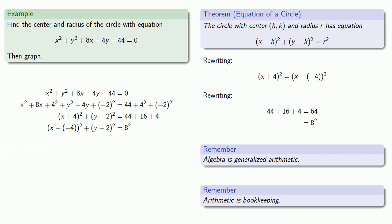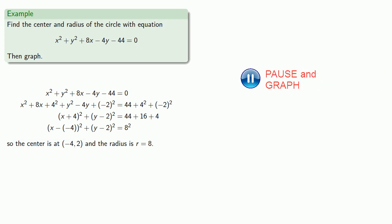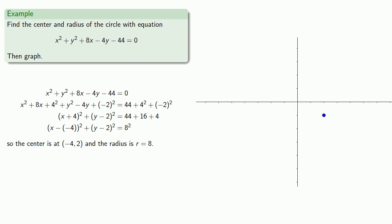Now our equation of the circle is in the same form as the standard equation. We can see that the center is at (minus 4, 2) and the radius is r equals 8. Finally, we can graph the circle. We know where the center is, so we'll graph that center point and label the coordinates.